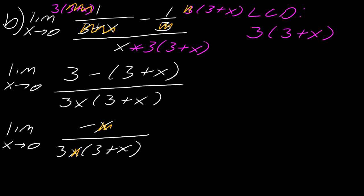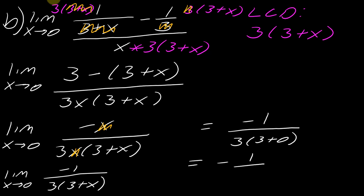So now I'm left with the limit as x approaches 0 of negative 1 over 3 times 3 plus x. And once again I'm now in the situation where I can actually just plug in my number here. So now if I evaluate the limit this will all become negative 1 over 3 times 3 plus 0, and so ultimately that's negative 1 over 9, so that would be the answer for that one.